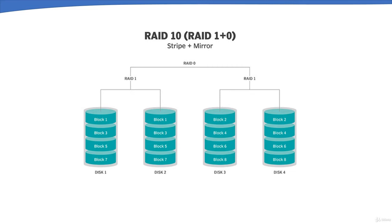The main disadvantage of RAID 10 is that half of the storage capacity goes to mirroring. Compared to larger RAID 5 or RAID 6 arrays, this is a more expensive way to have redundancy.